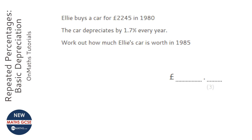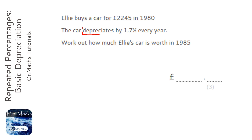I'm going to be using the multiplier method for this question. If you've got a different method that works really well then stick with it, but you do need to know the multiplier method for the GCSE. The word that probably tricks most people is 'depreciates' — it means goes down, it loses value.